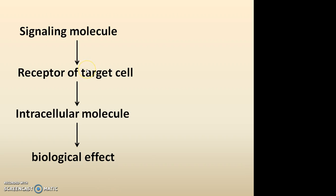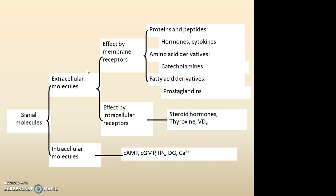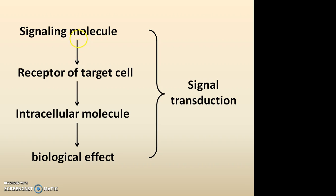A signaling molecule binds to a particular receptor present on the target cell. After the activation of the receptor, it will activate intracellular molecules called secondary messengers, and the secondary messengers either activate a tertiary messenger or directly show a biological effect.